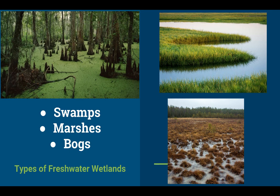Swamps contain emergent trees that can grow out of the water, and they mostly exist in the southeastern United States — Virginia, North Carolina, Florida, and Georgia. Marshes feature non-woody vegetation like cattails and sedges. Finally, bogs are very acidic environments — if there are any trees, they're usually just spruce trees, and there's a lot of moss.